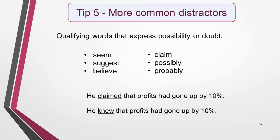Tip five: also be on the lookout for qualifying words that express possibility or doubt, such as seem, suggest, believe, claim, possibly, probably. Again, they can totally alter the meaning of a sentence. For example: 'he claimed that profits had gone up by 10%.'